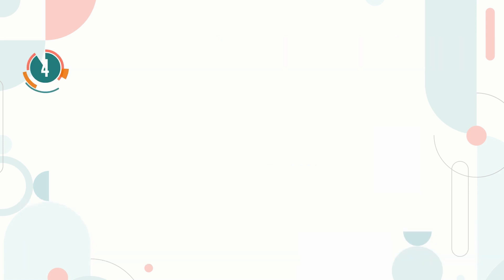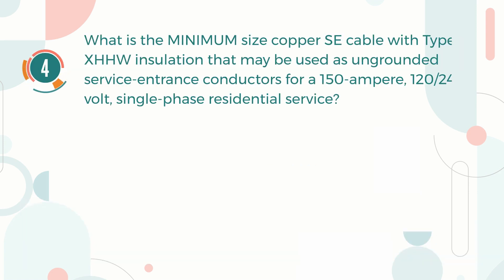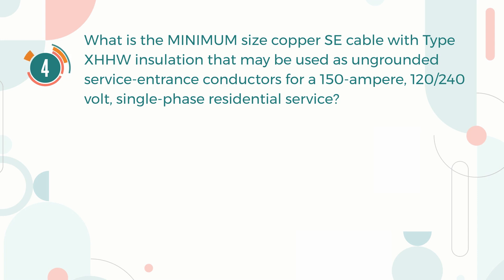Number 4. What is the minimum-size copper SE cable with type XHHW insulation that may be used as ungrounded service entrance conductors for a 150 Ampere, 120/240 Volt, single-phase residential service?